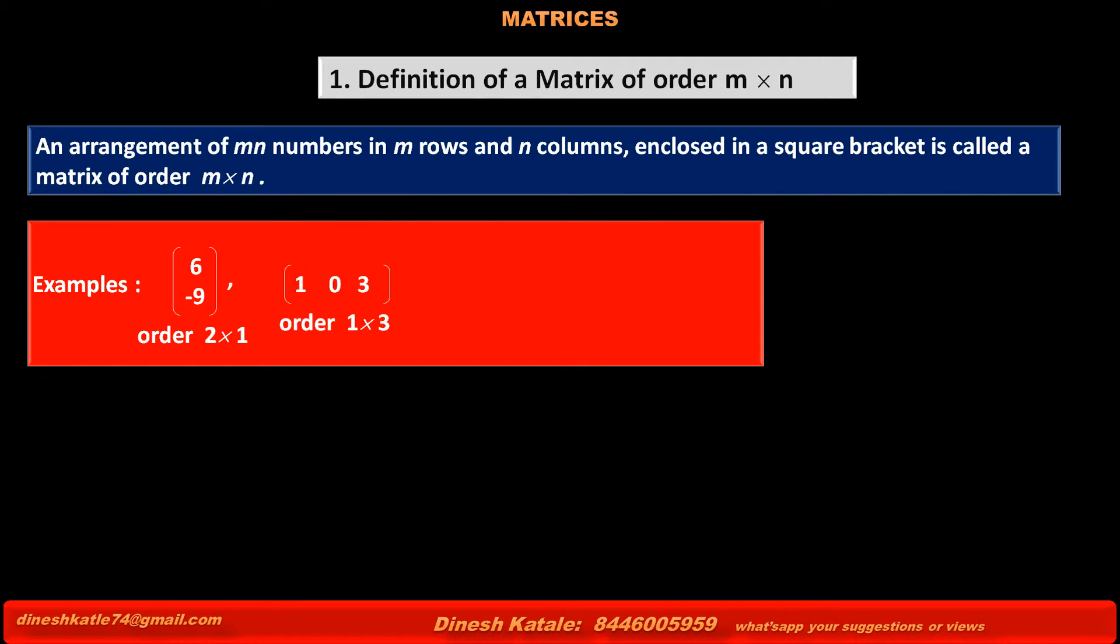So its order is 1 into 3. The third matrix contains six elements: 5, 1, 7 in the first row, and minus 4, minus 9, 32 in the second row. This matrix has two rows and three columns, so its order is 2 into 3.